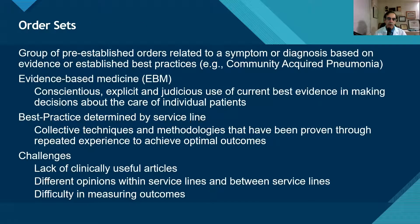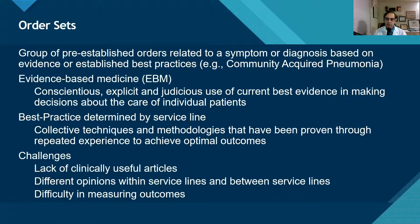Order sets are pre-established sets of orders based on a condition. They use evidence-based medicine — we go to the literature and find out what it says about a certain disease state such as community-acquired pneumonia and how to treat it. We also look for best practices determined by the service line. For example, if cardiology feels that a certain set of orders should be used in acute coronary syndrome, those orders can be placed together. The challenge is sometimes we don't have the evidence behind it, we have different opinions between service lines, and we have difficulty measuring outcomes.